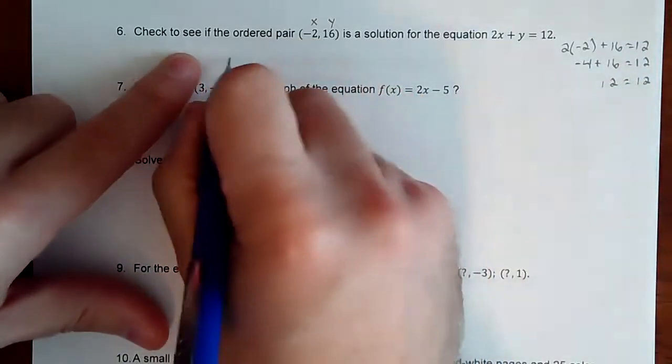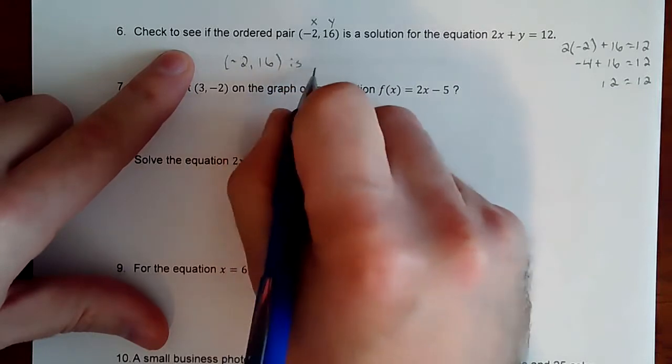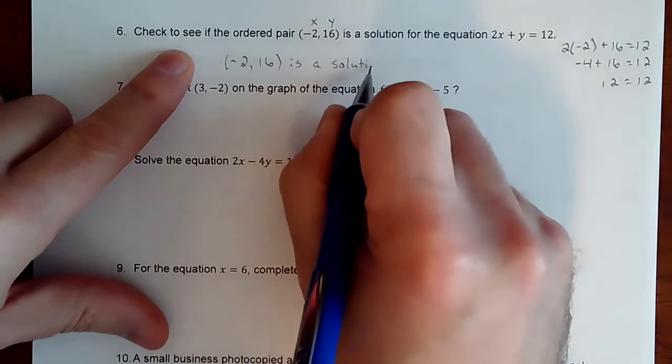Yes. So that tells me that negative 2, 16 is a solution, which also means it would be a point on the graph if we graphed it.